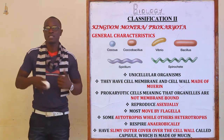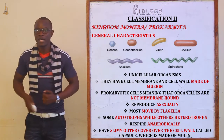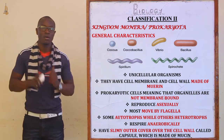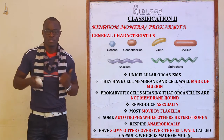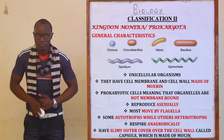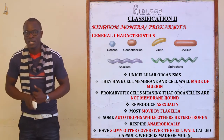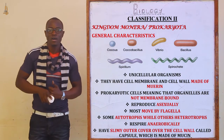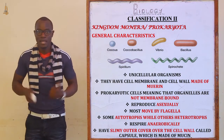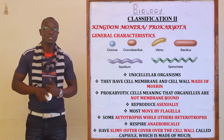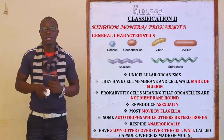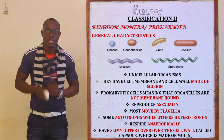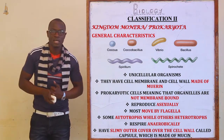Bacteria respire anaerobically, meaning they do not require oxygen for respiration. They also have a slimy outer cover over the cell wall called the capsule, which is mainly made up of the new spin enzyme.